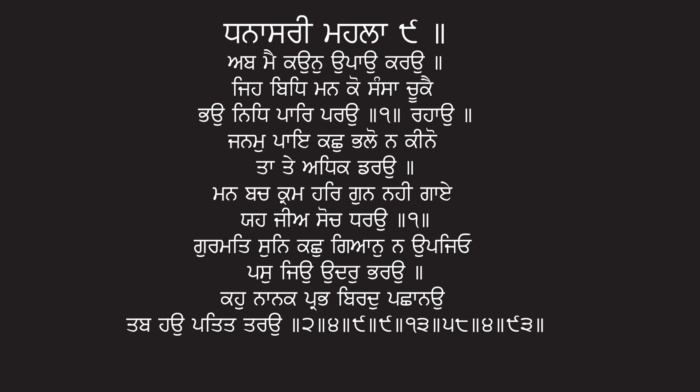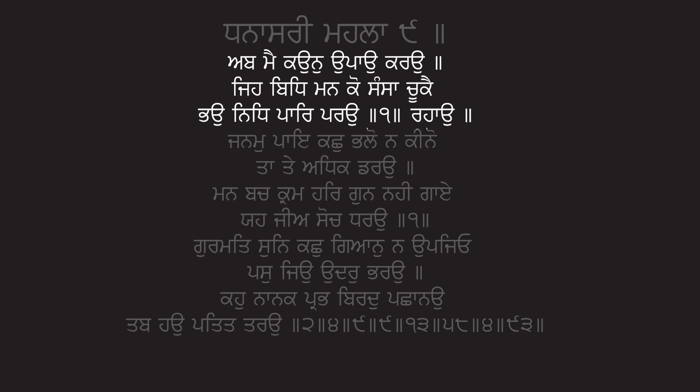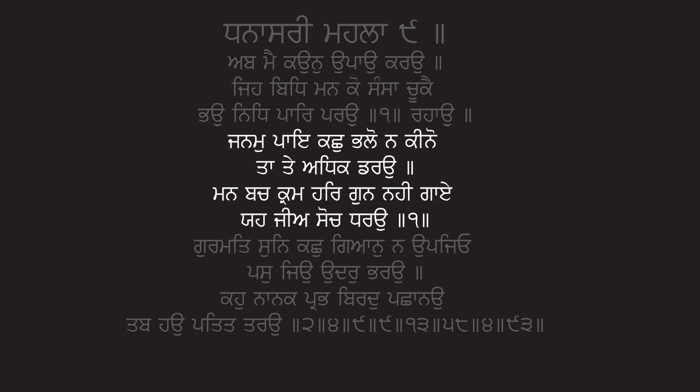We're going to go through the numbering system that's in Gurbani. We're going to use this Shabd here - Tanah Sri Mahala Nauma, which is Guru Tegh Bahadur Ji's Shabd. Now if we look at the long number list at the end, that's what we're going to work out - what does that mean? So we're going to start at the top of the Shabd. The Rahau is the center point of the Shabd, so in English terms when we do singing, that's the chorus. The Rahau being the center point is always a one - it doesn't count inside the verses.